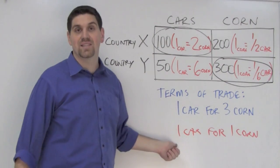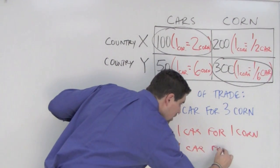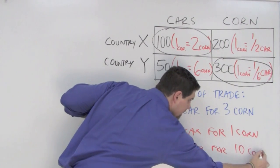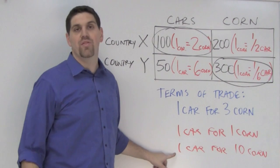Now, Country Y loves this idea. Now, what if we had one car for ten corn? Country X likes this idea, but Country Y hates this Terms of Trade. Why?